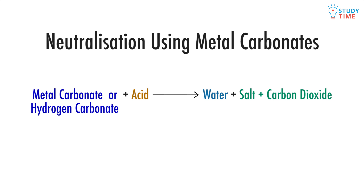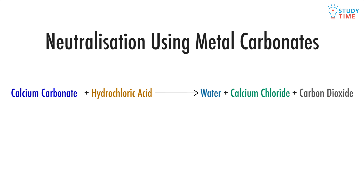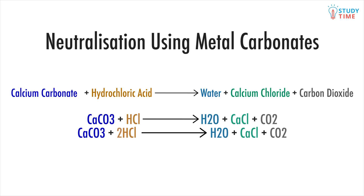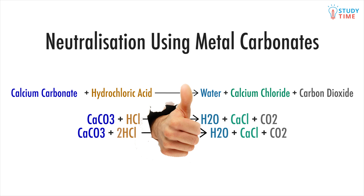If we add a metal carbonate or a metal hydrogen carbonate to an acid, we get the same water and salt plus carbon dioxide. So if we add hydrochloric acid to the base calcium carbonate, we end up with water, calcium chloride, and carbon dioxide. Write out the equation, then replace with the formulae: HCl + CaCO3 → H2O + CaCl2 + CO2. We can see there is an extra hydrogen on the right-hand side, so we write 2HCl on the left to balance it out. Now there's the same amount of atoms on the left as on the right, and everything is balanced.